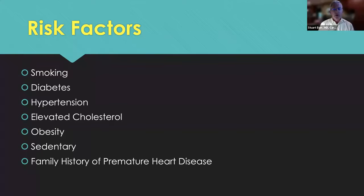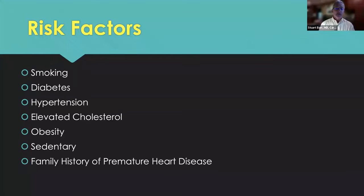Diabetes is another very potent risk factor for having premature heart disease. You need a blood test — the hemoglobin A1C. Many people with diabetes are overweight and their diabetes gets better if they lose weight. But other people, even if they're thin, have diabetes that needs to be treated to get that hemoglobin A1C as low as possible into the normal range.